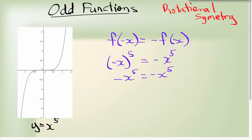Most of your power functions with an odd power are going to be odd functions. x to the power of 3 is an odd function. x to the power of 7 is an odd function. Most of those are going to work out that way. That is an odd function.